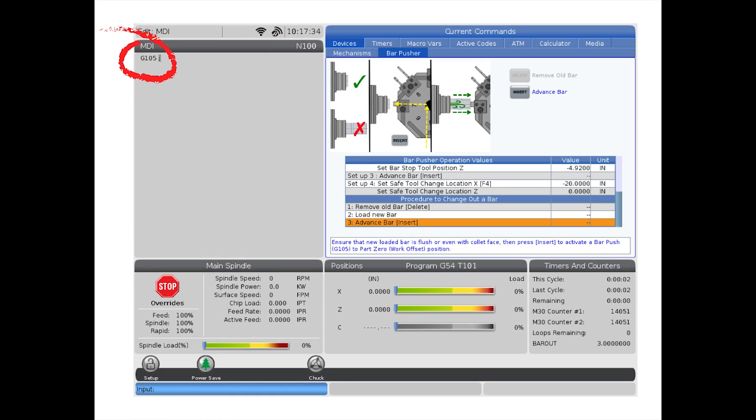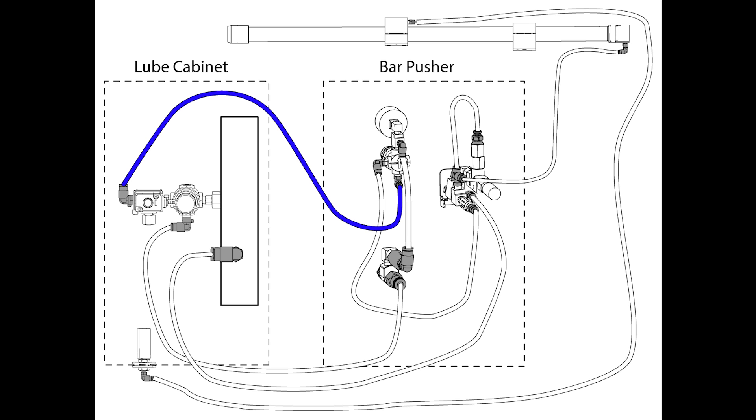When a G105 activates the push command, air is supplied at 35 psi through an air regulator in the lube cabinet. After the regulator, air flows from the solenoid in the lube cabinet to the regulator on the bar pusher. Air then flows through an orifice past the retract switch and then to the end of the piston.